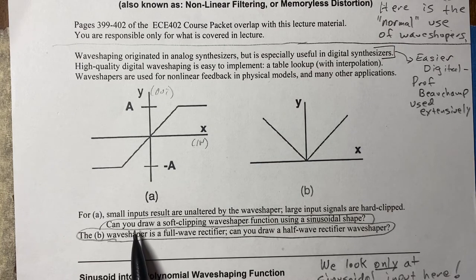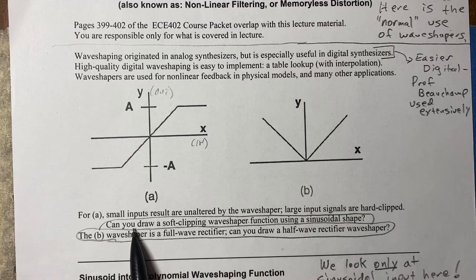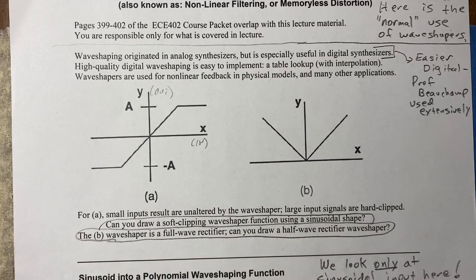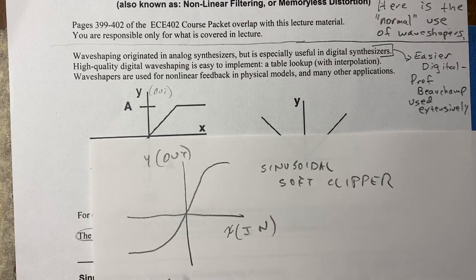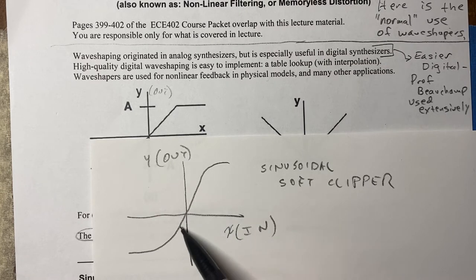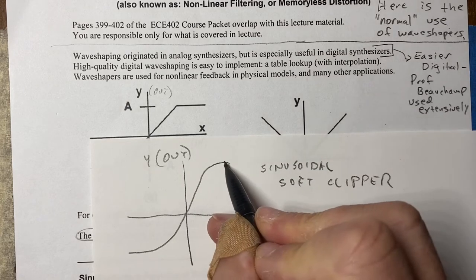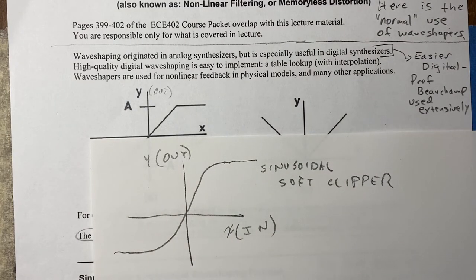My question for you: can you draw a soft clipping wave shaper using a sinusoidal sort of shape? In the Eigen matrix, you most commonly use a sinusoid because it's so convenient. Please stop the video and try to draw a soft clipper. Your soft clipper should look something like this — at small values, you have a straight line, but as you go higher, it eventually flattens out in a sinusoidal sort of shape. That's a sinusoidal soft clipper.